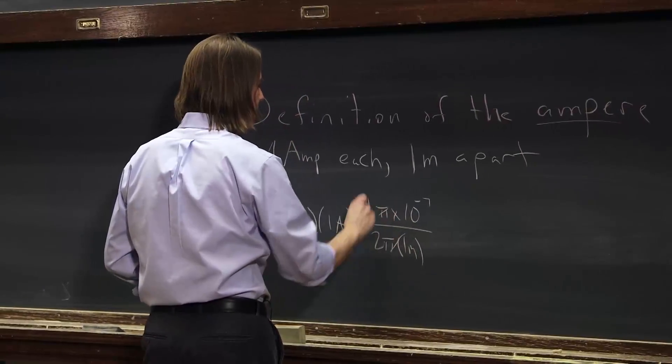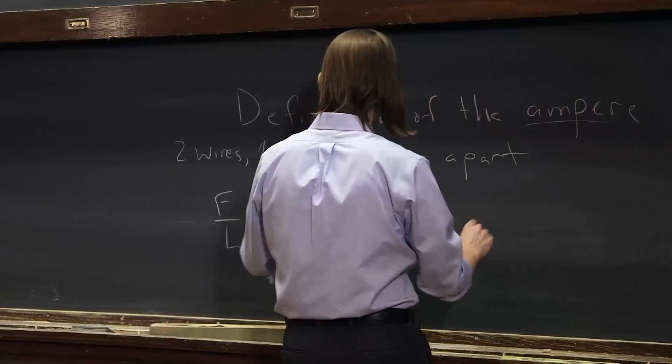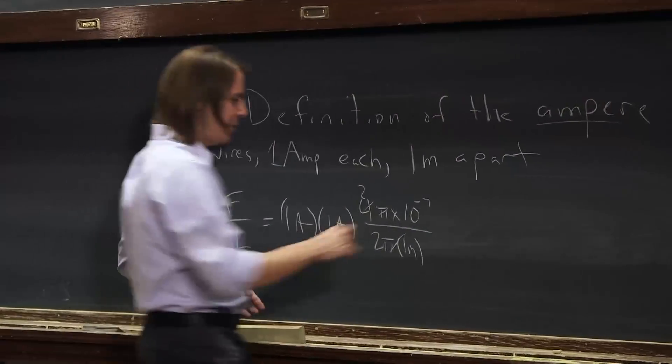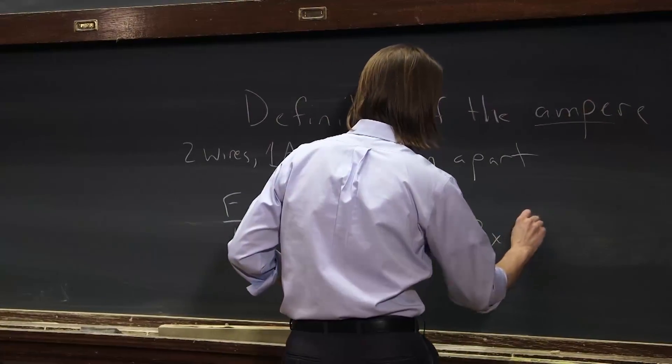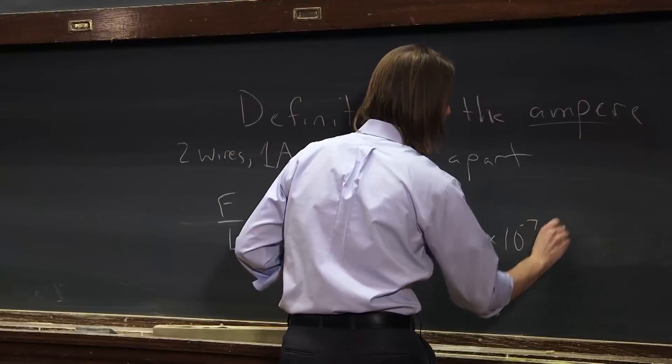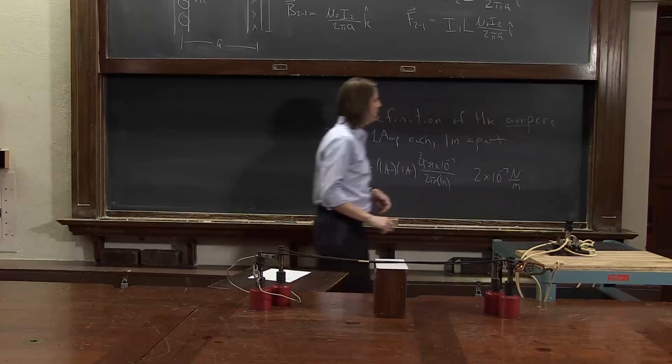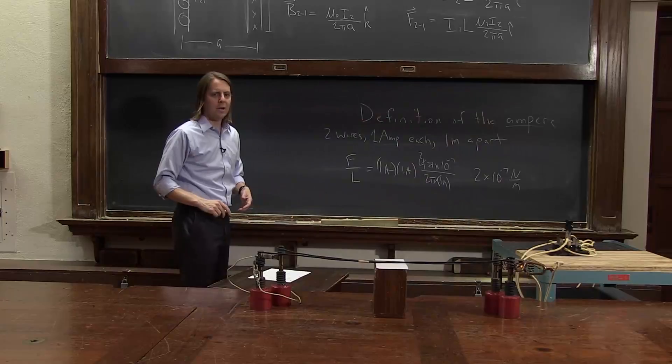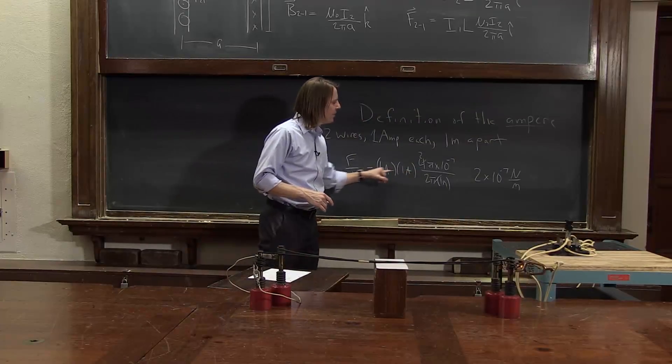Well, the pi's go away, that becomes a 2. So in the end, the answer is 2 times 10 to the minus 7 newtons per meter, is the force per unit length you get. So that's measured, and that means by definition that's an amp, because this is how it's defined,